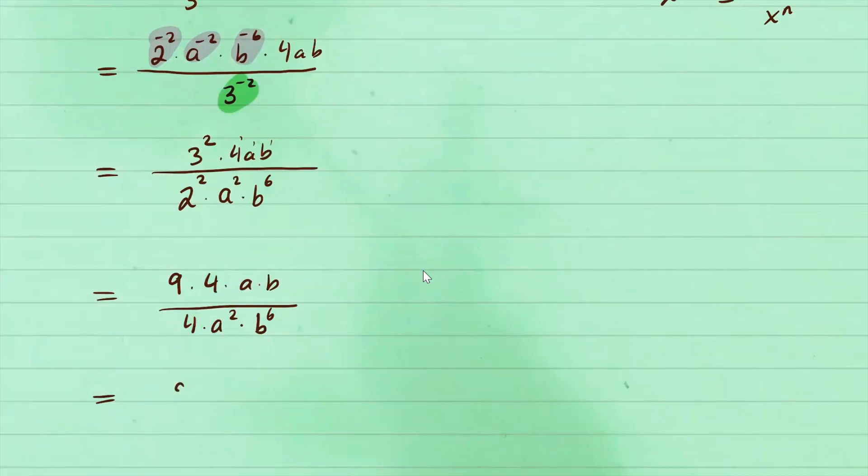This is 9 on top, 4 cancels out. So for a over a squared, that's simply a to the 1 minus 2. That's a to the negative 1. So instead of writing a to the negative 1 here, I'm going to put it on the bottom. So that would just be a.